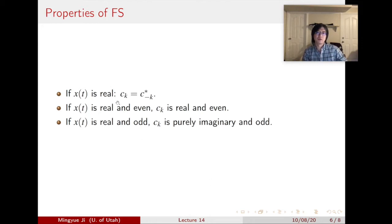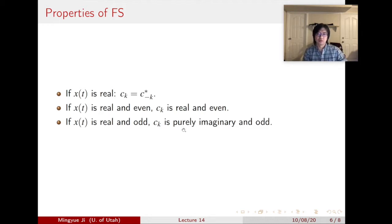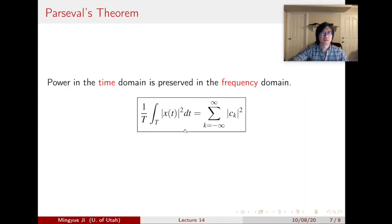The next three are special properties when x of t is real. If x of t is a real signal, then c of k equals c of negative k conjugate. If x of t is real and even, then c_k is real and even. If x of t is real and odd, then c of k is purely imaginary and odd.